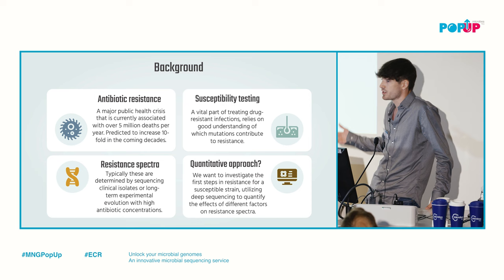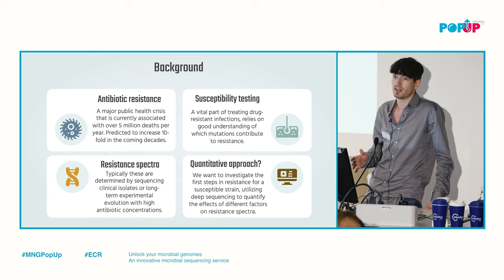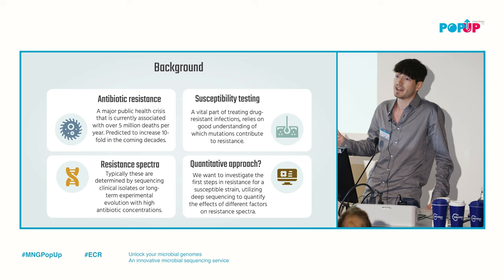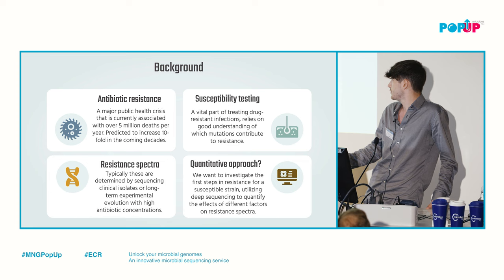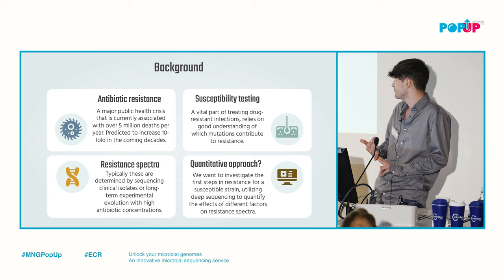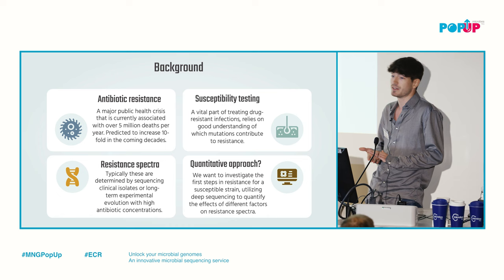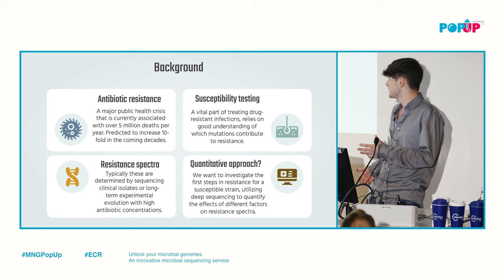Typically, resistance spectra are determined by sequencing clinical isolates or sequencing results of long-term experimental evolution experiments using quite high antibiotic concentrations. What we want to do is develop a quantitative approach to look at the first steps of resistance acquisition for a susceptible strain, utilizing deep sequencing to quantify the effects of different factors on resistance spectra — looking at the spectrum across different antibiotics and different background strains.